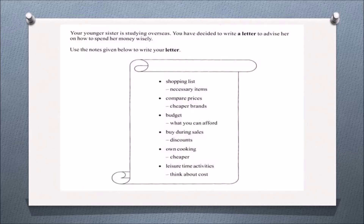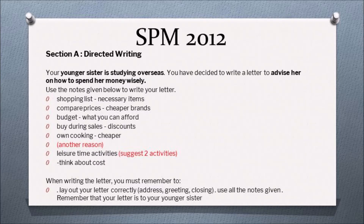Let's look at the SPM Paper 1 for the year 2012 on informal letter. This is the old format, and I have made some changes to the content points to reflect the new format. Section A, directed writing: your younger sister is studying overseas. You have decided to write a letter to advise her on how to spend her money wisely. Use the notes given below to write your letter.